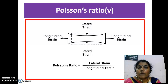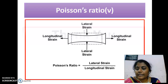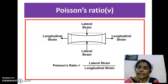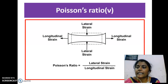Finally, we can see about Poisson's ratio, denoted by μ. When a force is applied along the length of a wire, the wire elongates along its length but contracts radially, producing both longitudinal strain and lateral strain. Poisson's ratio is defined as the ratio of lateral strain to longitudinal strain: μ equals lateral strain divided by longitudinal strain.